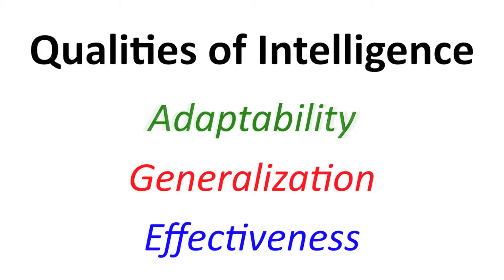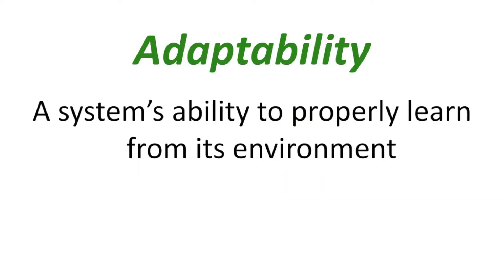The first of these features, adaptability, simply refers to a system's ability to learn. If the system is failing, it needs to modify something until it works, and it needs to do so in a non-random manner, converging on a working solution. The system needs to have some sort of reward feedback to understand when an attempt goes better or worse than before, so that the system knows it's getting closer or further from a solution.